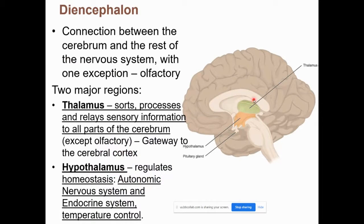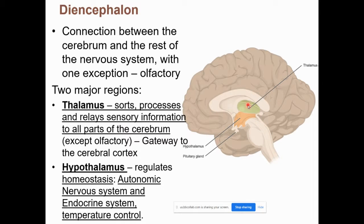The diencephalon is the next deep part of the brain, consisting of two parts: thalamus and hypothalamus. The thalamus is responsible for sorting and relaying sensory information to all parts of the cerebrum. For example, an impulse from your thumb gets directed to the somatosensory area; an impulse from your stomach gets directed to the insula. It's conveniently located right in the middle.